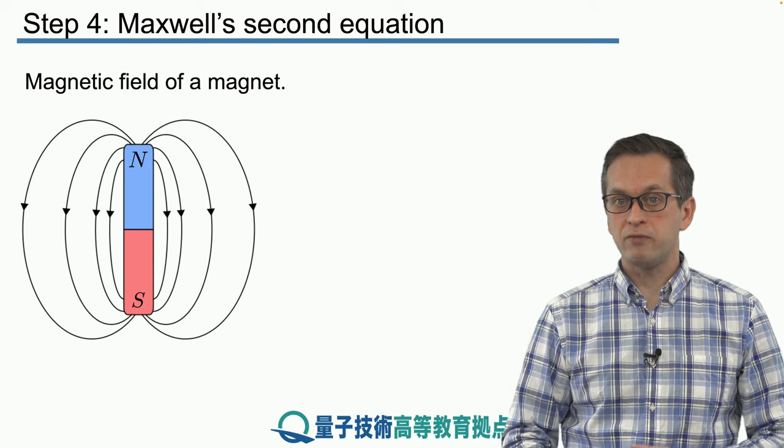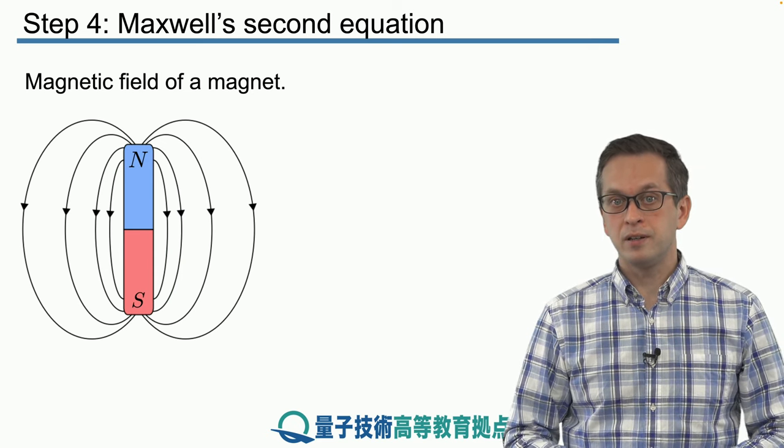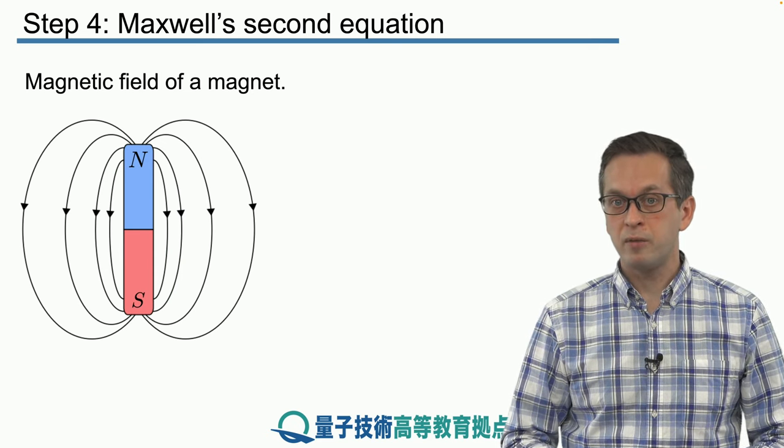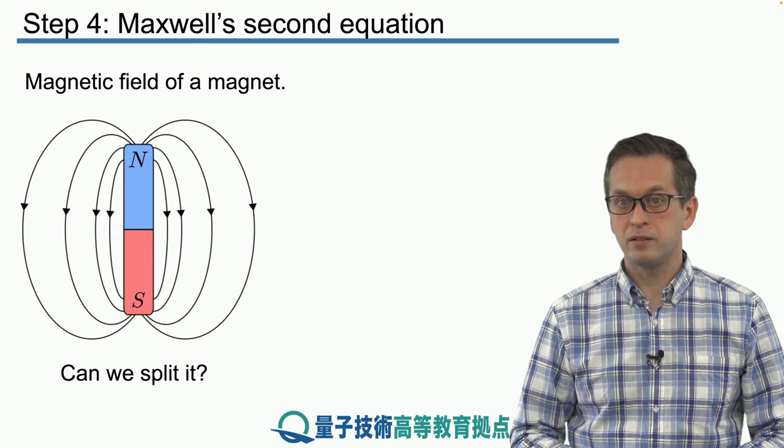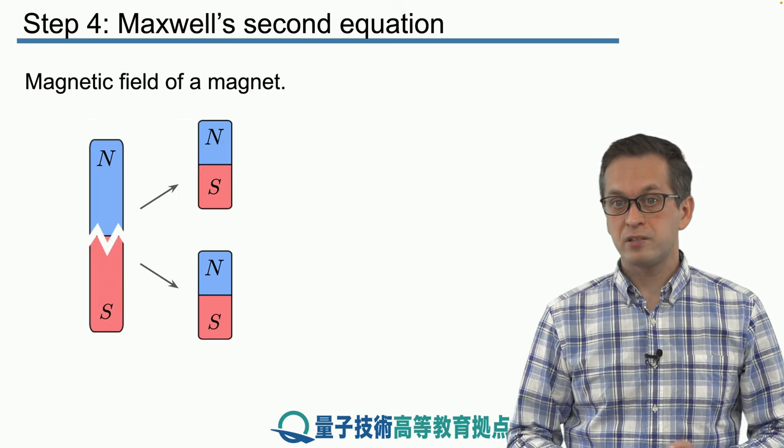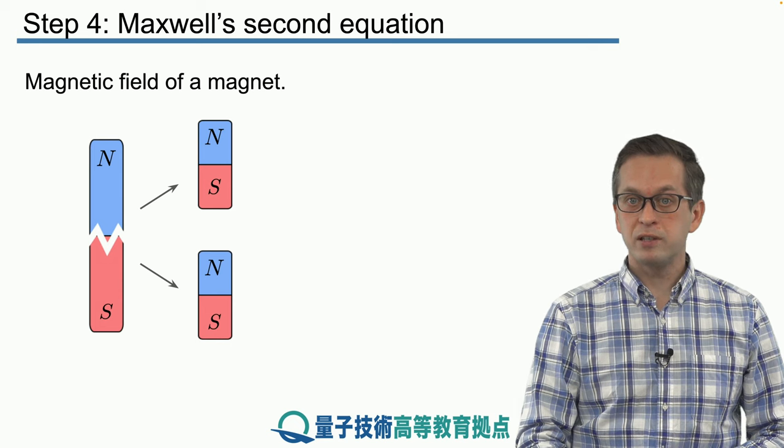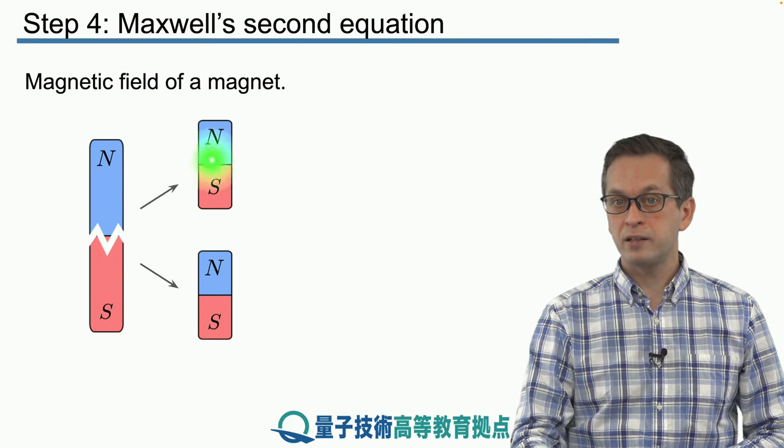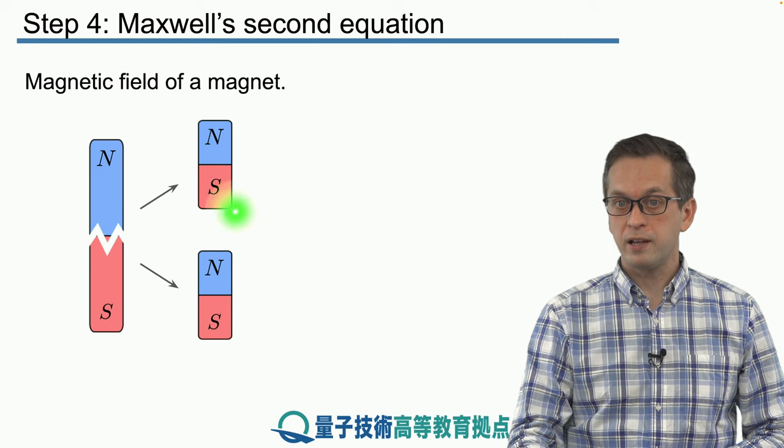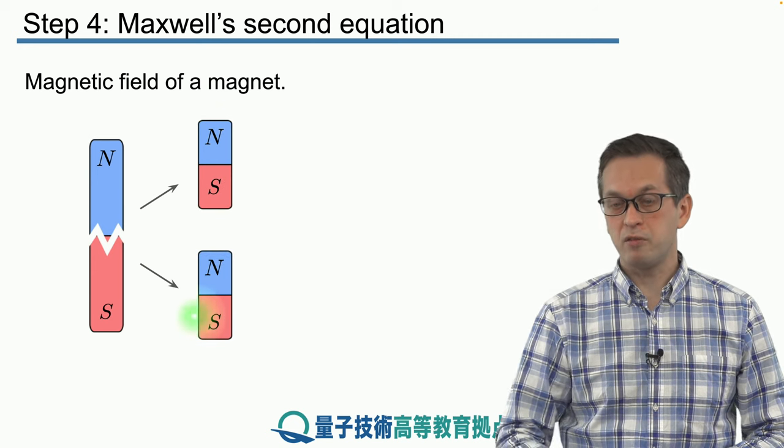So you can say, okay, if I have a magnetic field produced by a bar magnet, can I just split the bar magnet? You can split it, but it's not going to help. Even if you split it, you're going to produce two smaller bar magnets and both of them will have a north pole and a south pole.